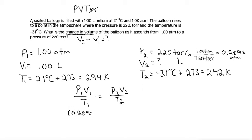I plugged in the wrong number for P1. Let me go back. P1 is 1 atmosphere. V1 is 1 liter divided by 294 equals our P2, which is 0.2895, times V2, which is what we're looking for, divided by T2, which is 242.